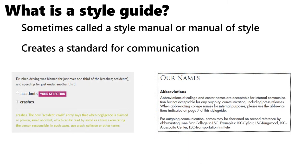A style guide can also set up standards for the type of language used to describe certain things. Here on the left is a sample from the Associated Press AP style guide. You can see a question about whether to use 'drunk driver' or similar phrasing, and the correct answer is 'crashes' — they give a little explanation about why, when writing for AP, you use 'crashes' instead of 'accidents.' Over on the right is a clip from the Lone Star College style guide, which specifies the proper way to refer to a campus name, such as LSC-North Harris.